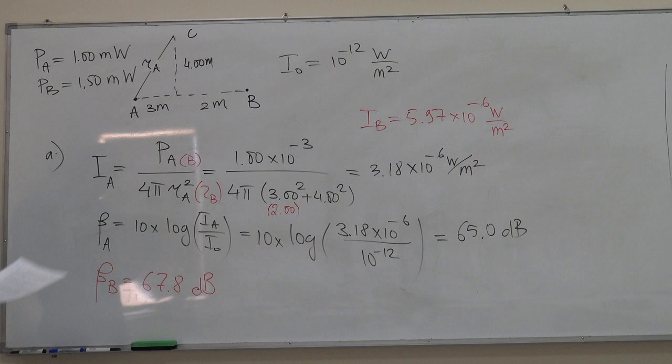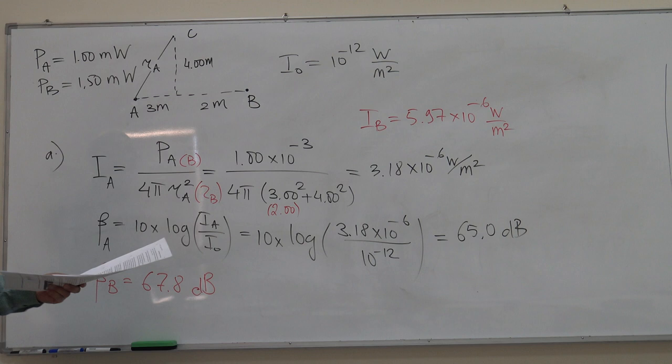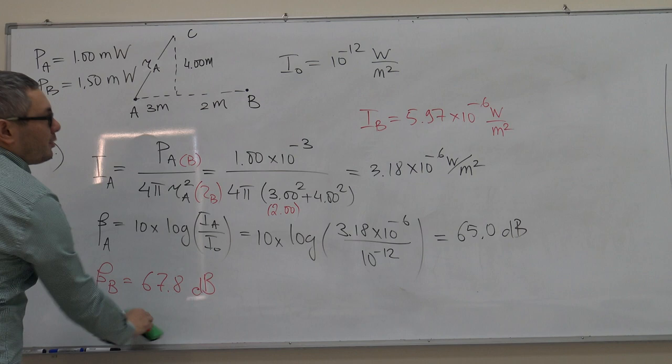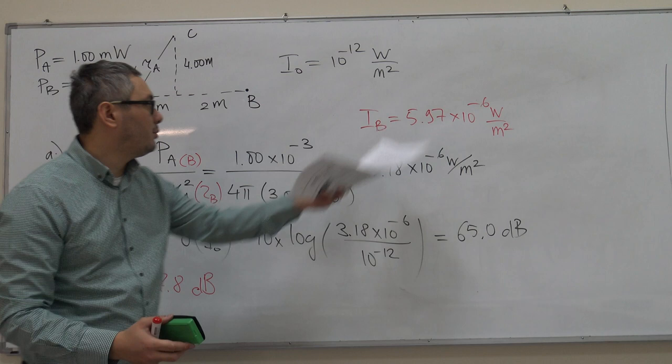The last part is asking us to calculate the loudness when both speakers are turned on, so both A and B are working. You may be tempted to say that we can calculate the total power by just adding the two powers, but that would be wrong. What you have to add is the intensities of both speakers at point C. If we know the intensity for A and for B, we can just add them up.